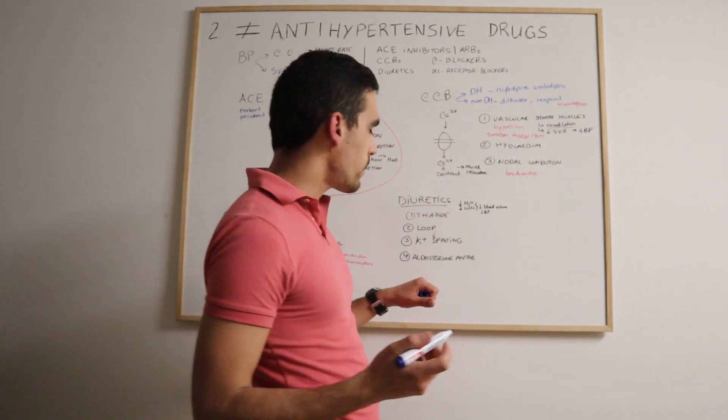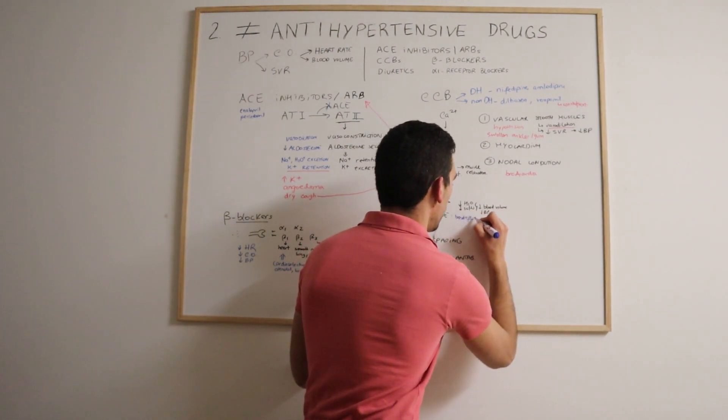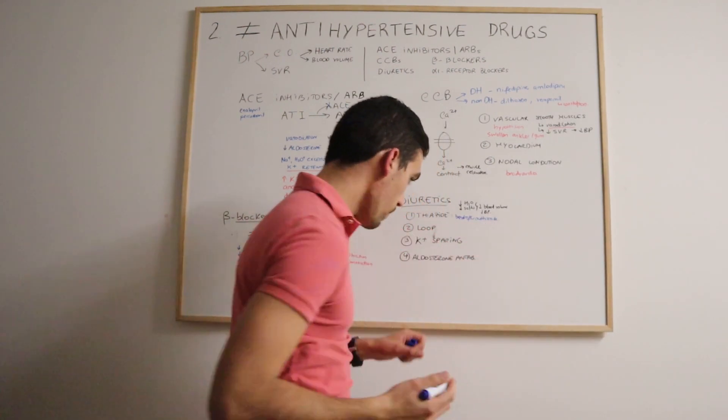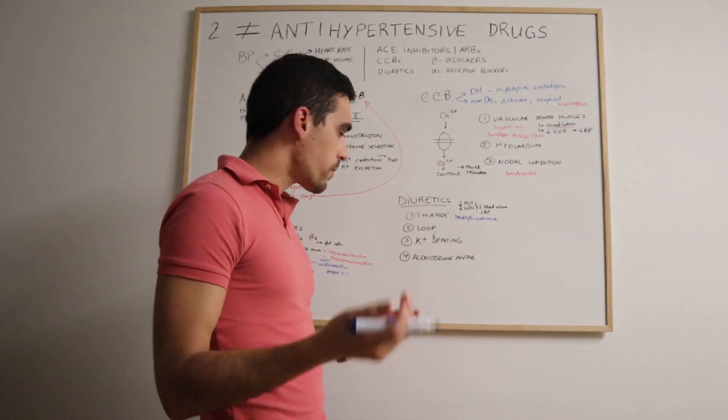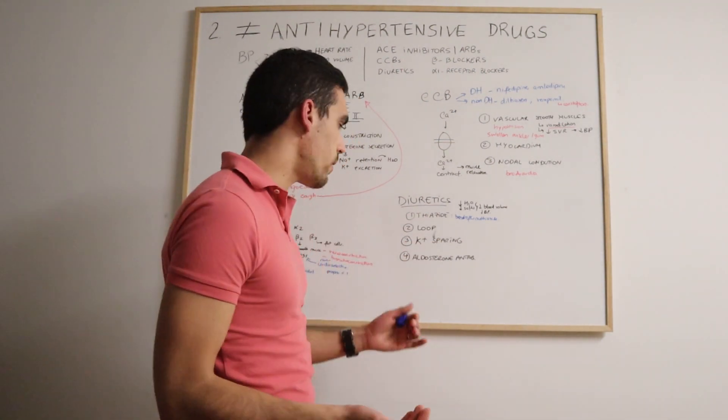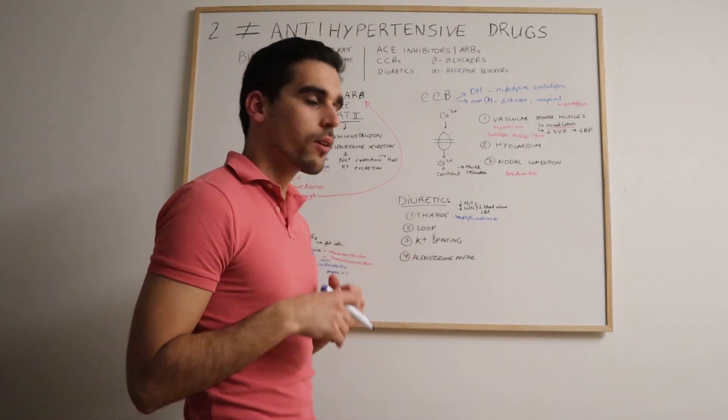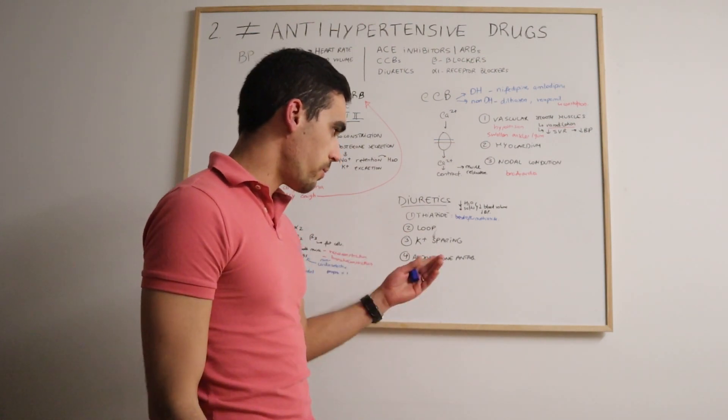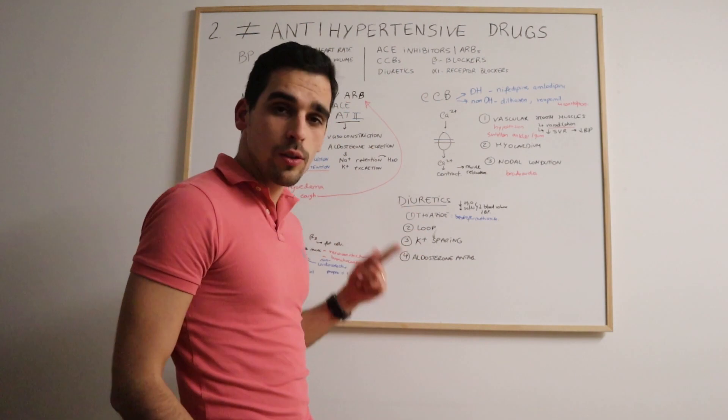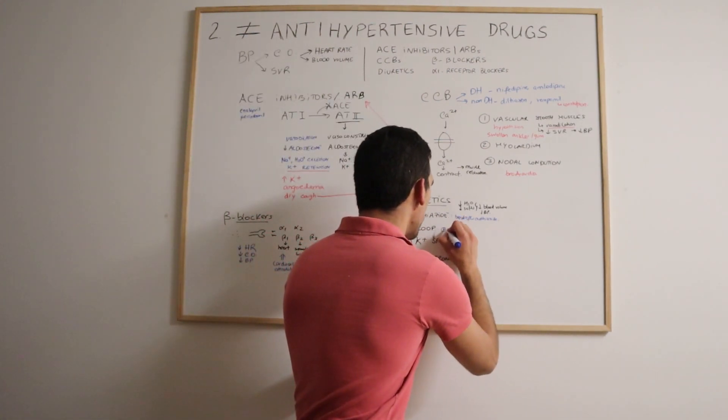We have different types of diuretics. The first one is the thiazides. One example is bendroflumethiazide. Basically, with these thiazides, they inhibit the reabsorption of sodium and water in the distal convoluted tubule. So we get rid of them, the water and the salt, and our blood pressure decreases.